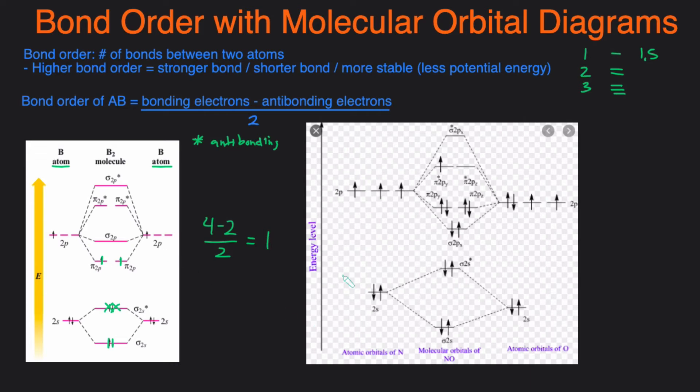So let's count up the number of bonding electrons and that would be one, two, three, four, five, six, seven, eight.